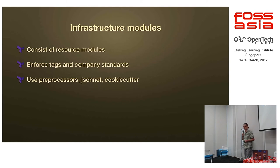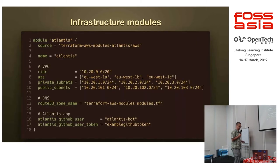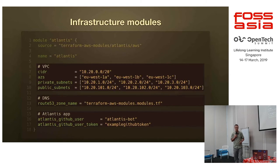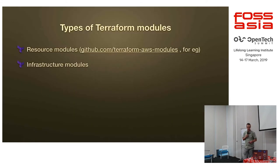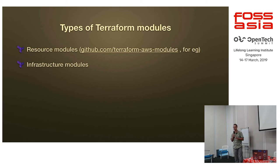It is also a good way to fulfill missing bits of Terraform. You may use different tools to generate parts of your code using JSON-Net, cookie cutter, or other types of preprocessors. Infrastructure module invocation looks pretty similar — you specify the source and pass different arguments. Inside the module itself, you invoke different resource modules. That's the main difference between resource modules and infrastructure modules. Resource modules are those maintained on the Terraform AWS Modules GitHub organization, while infrastructure modules are what people have inside their organization for specific needs.